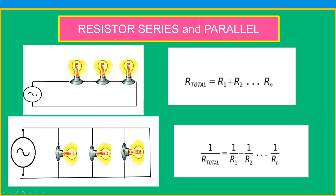And this is the parallel resistor. 1 over R total equals 1 over R1 plus 1 over R2 plus 1 over Rn.